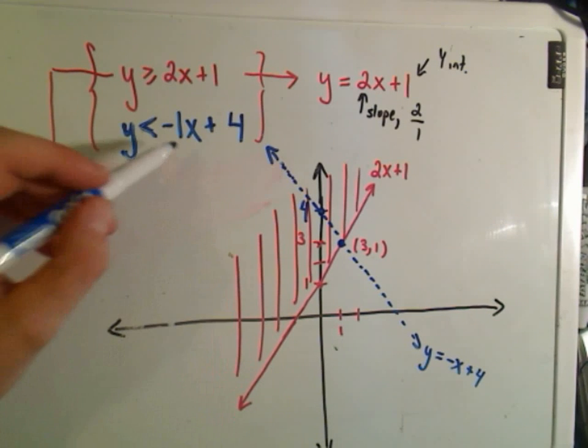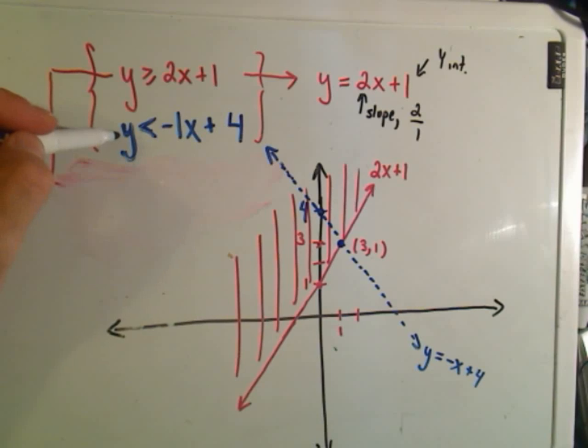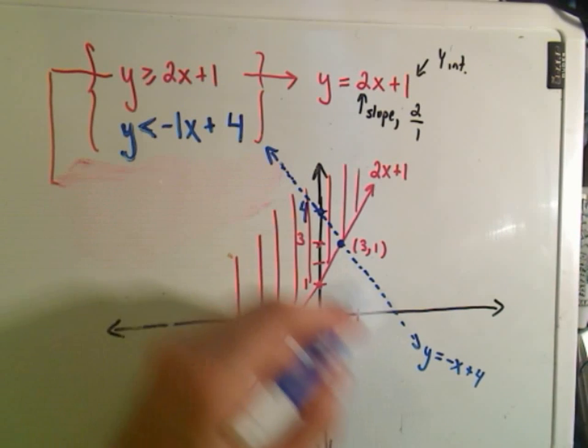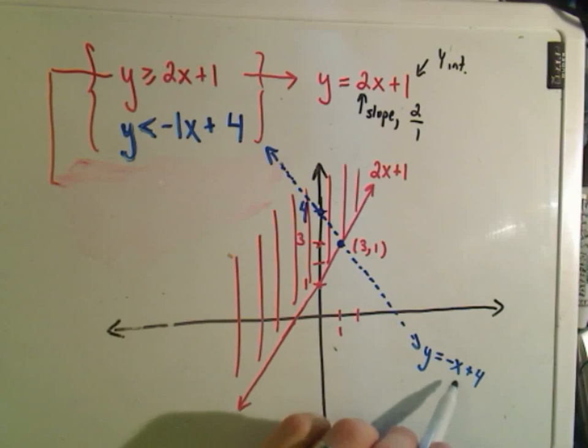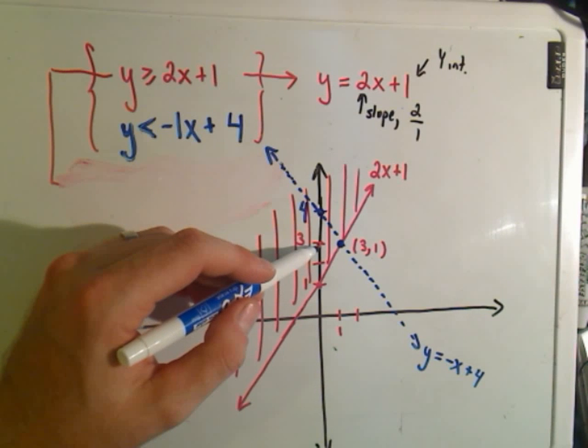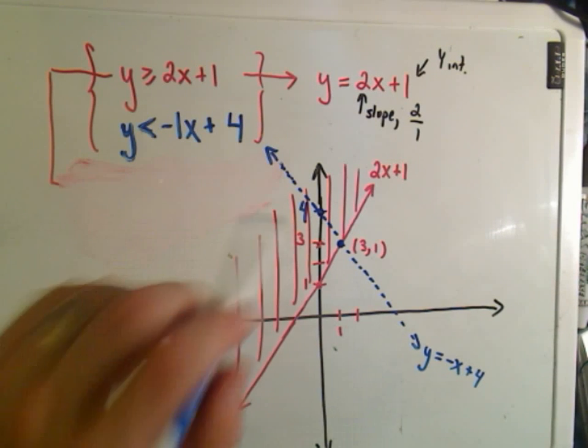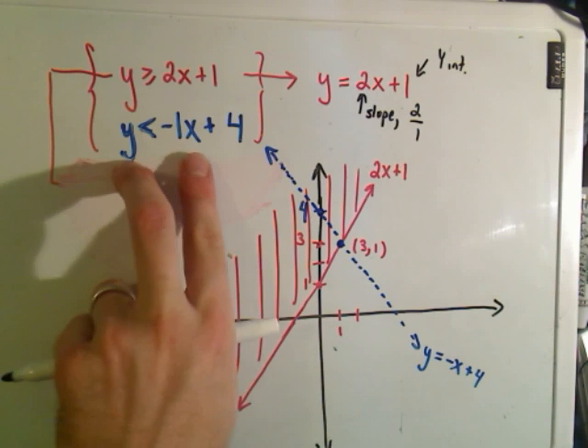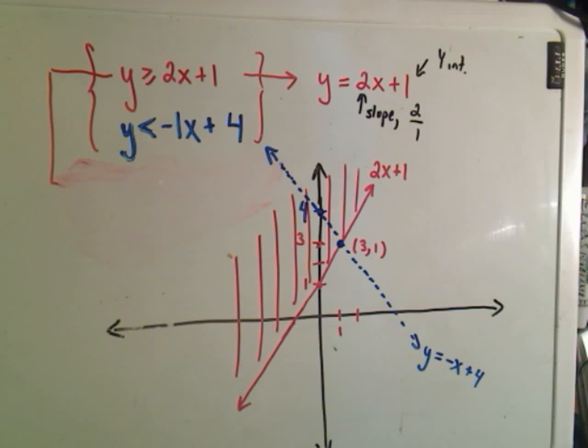The same way, you have to take a point off of this inequality. You have to take a point off the line negative x plus 4. Notice if you plug, again, 0, 3 in there. If you plug 3 in for y, 0 in for x, you will get a correct value.